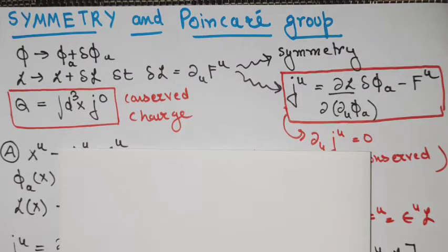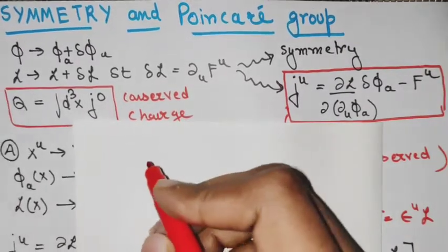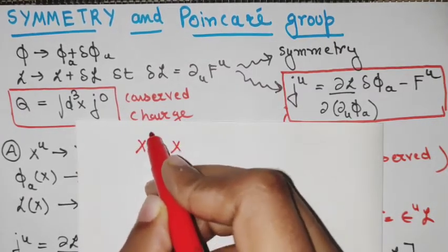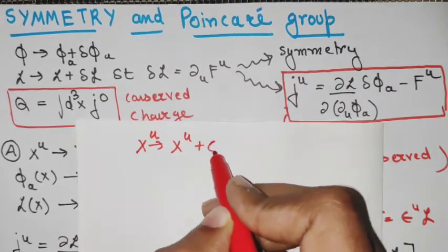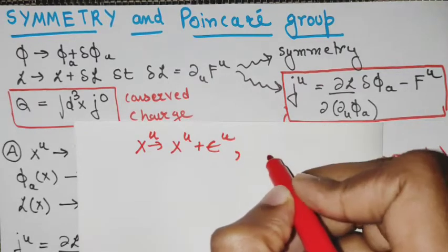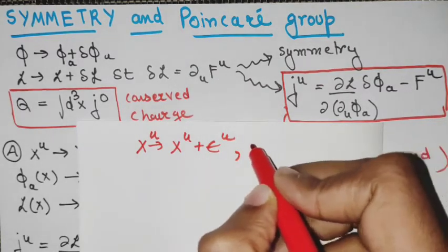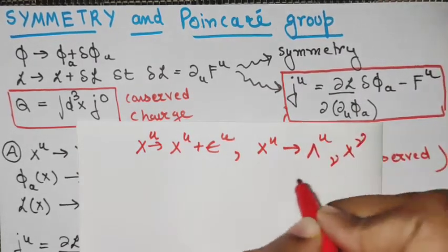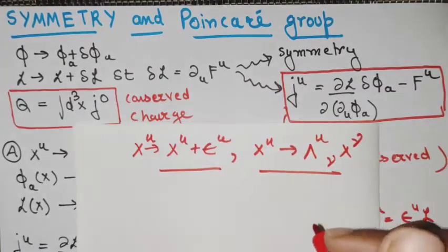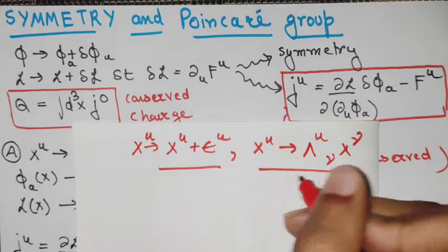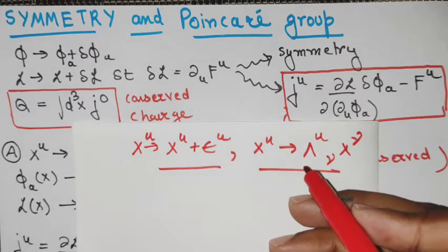Hello friends. In this video we will be discussing symmetries and the Poincaré group. The Poincaré group consists of translations as well as boosts and rotations. Translations take x^mu to x^mu plus epsilon^mu — translation in space as well as time. The Lorentz transformations, which include boosts and rotations, take x^mu to Lambda^mu_nu x^nu. These two together form the Poincaré group, and the Lorentz transformations individually form the (orthochronous) Lorentz group.